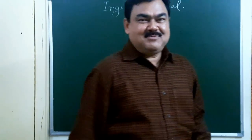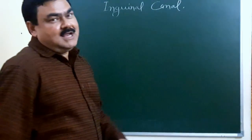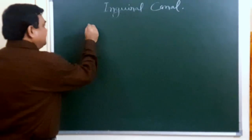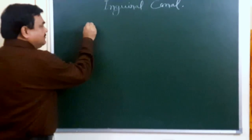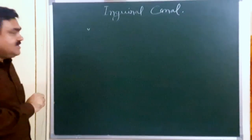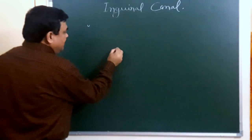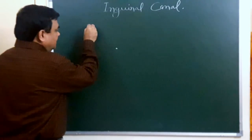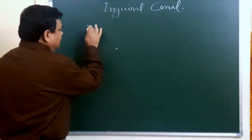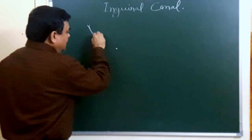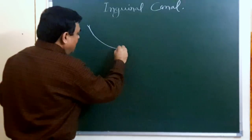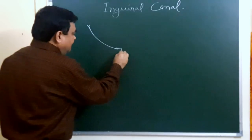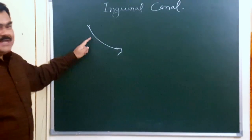Now we will discuss about the inguinal canal. Here is the anterior superior iliac spine, and here is the pubic tubercle. This is the inguinal ligament — running from the anterior superior iliac spine to the pubic tubercle. And this is the pubic crest. So this is the inguinal ligament.